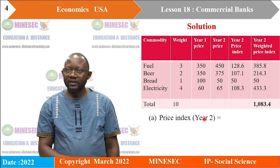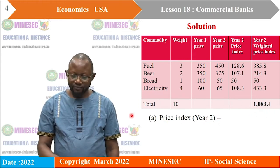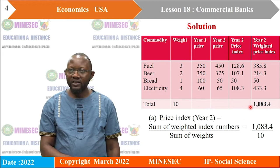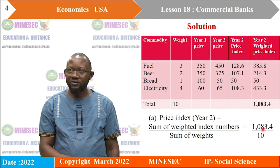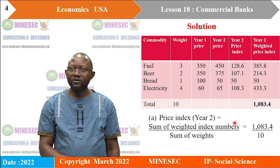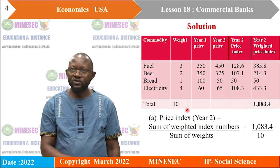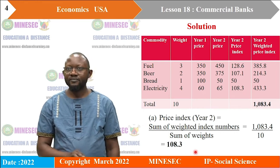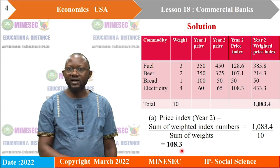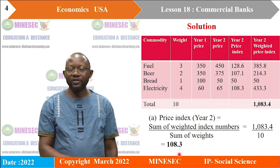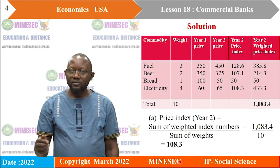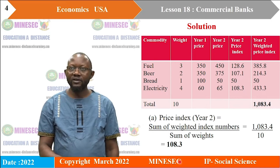The retail price index for year 2 is calculated using the formula: sum of weighted index numbers divided by the sum of weights. That is 1083.4 divided by 10 (which is 3+2+1+4), giving us 108.3. This shows that prices have increased by 8.3%, implying a probable increase in the cost of living and falling living standards.